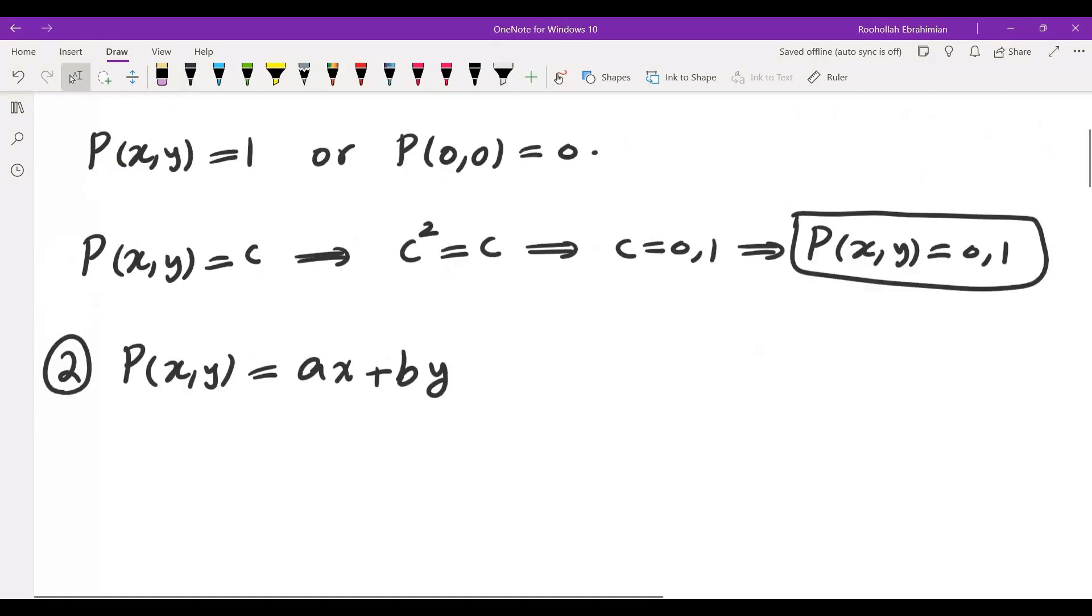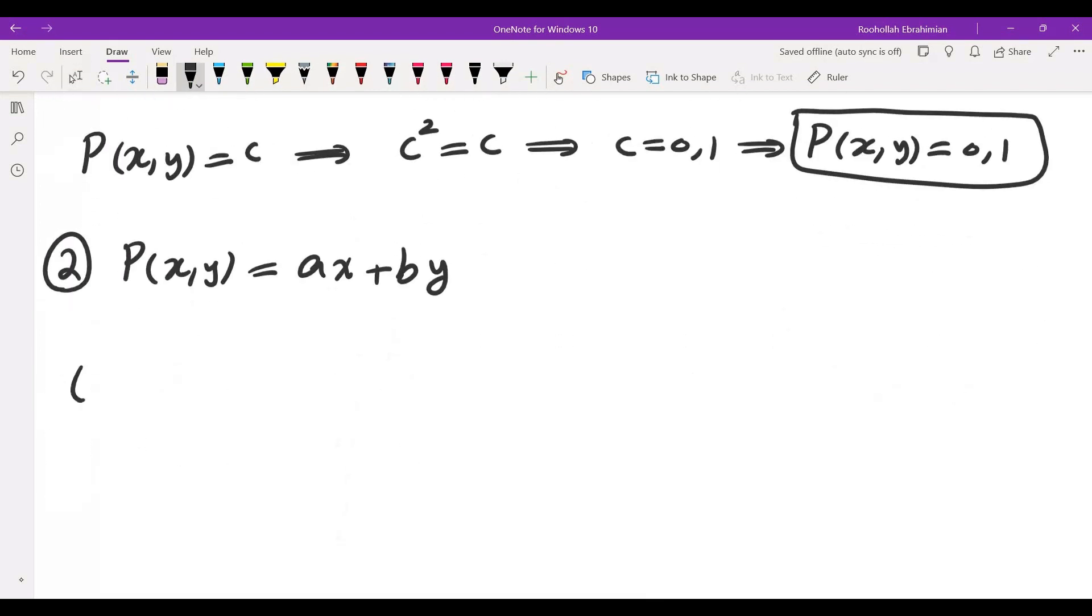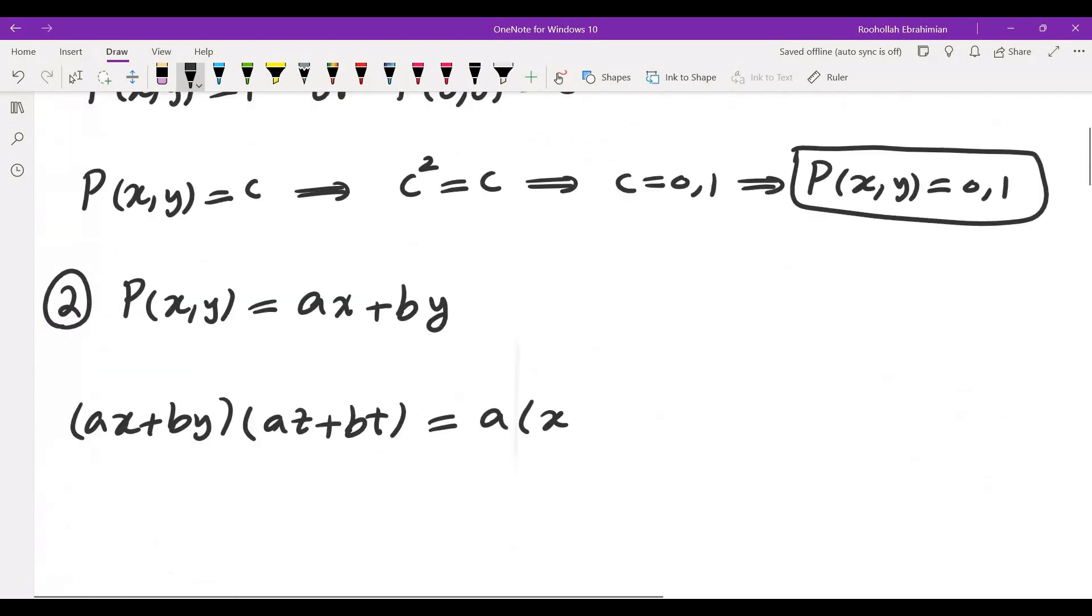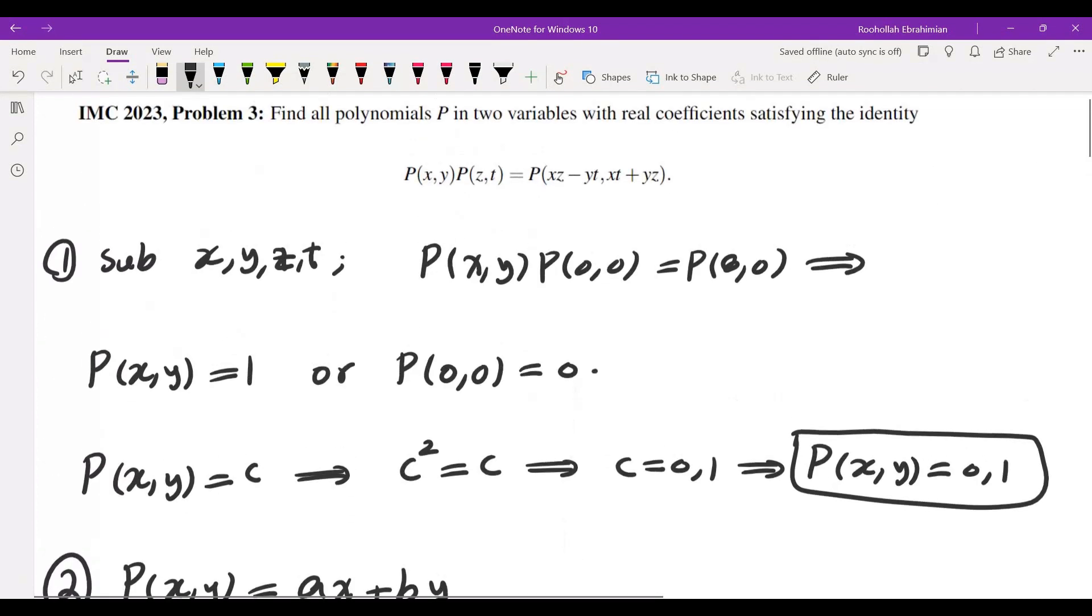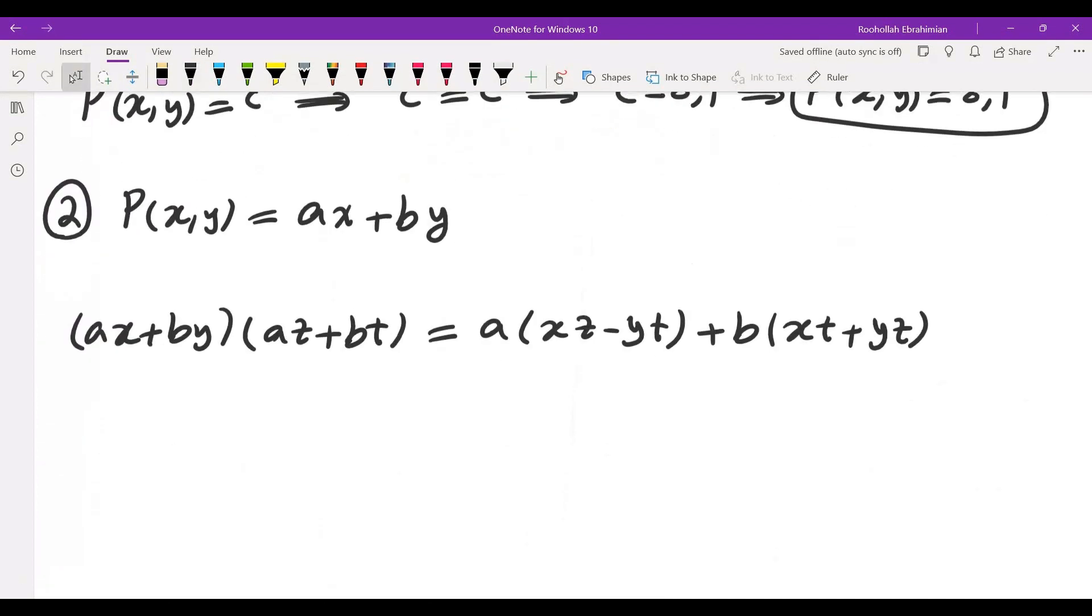So if I have something like this then I would get A X plus B Y times A Z plus B T is equal to A times so I had I believe it was X Z minus Y T and then plus B times X T plus Y Z. Yes. Okay. So let's compare the coefficients.